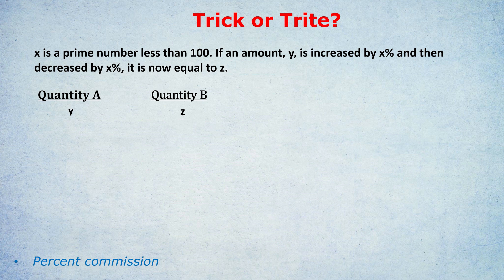If we then decrease that bigger number by the same percentage, we're decreasing by a bigger amount. 20% of 120 is 24. And if we take away 24 from 120, we end up with 96.